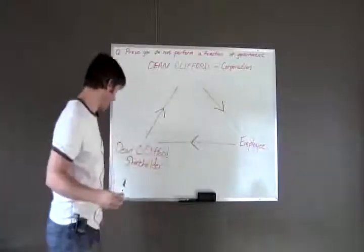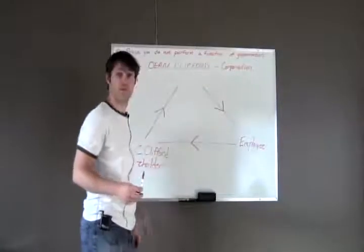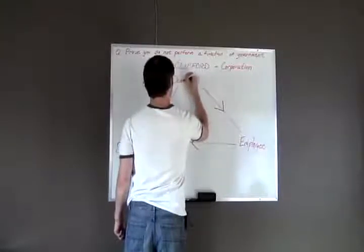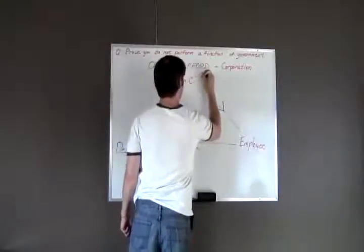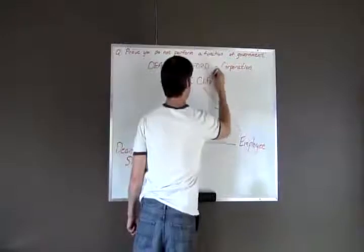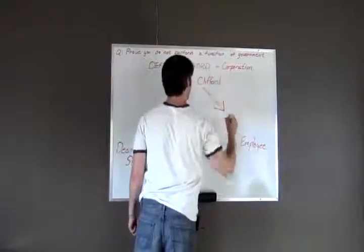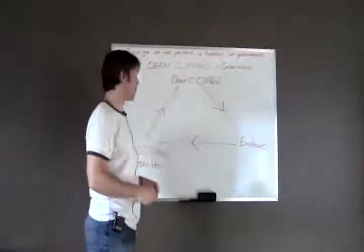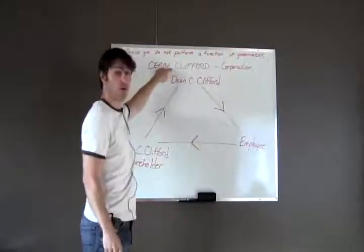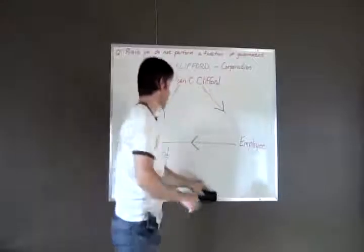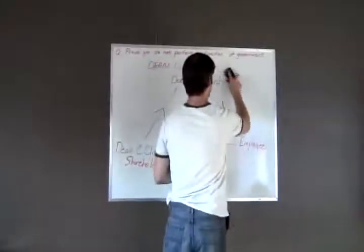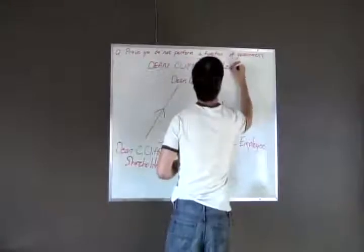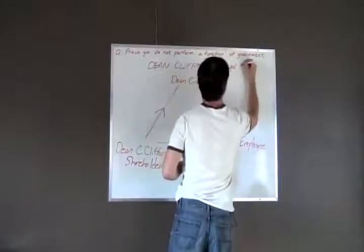So Dean had a shareholder meeting. He's decided he's about the only competent individual on the planet that can handle his affairs and his investments. So he appoints Dean C. Clifford as the director. Chairman of the board, president, CEO. I don't care what you want to call it. I'm the one who gives direction to the corporation now, a legal person. So we're just going to put this back to legal person so that everybody doesn't get confused by that.